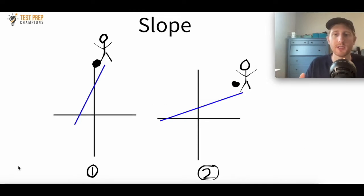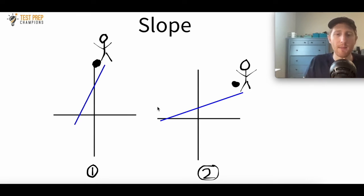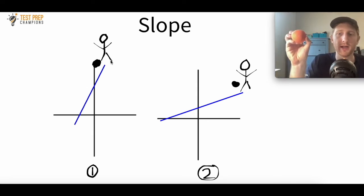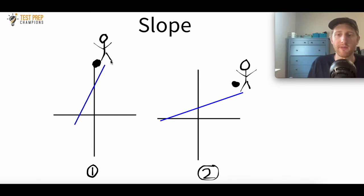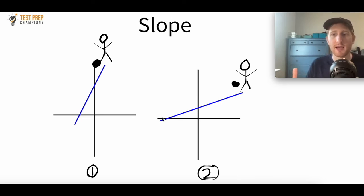Slope is a number that describes the steepness of a line. Imagine that we have two lines — line one and line two. Now imagine that both lines are hills, and someone drops a ball at the top of each hill and lets it roll down. Which hill do you think the ball is going to roll down faster — hill one or hill two? Well, hill one looks steeper than hill two, so the ball is going to roll faster down hill one. Both lines have a different slope, and again, slope is a number that describes the steepness of a line.